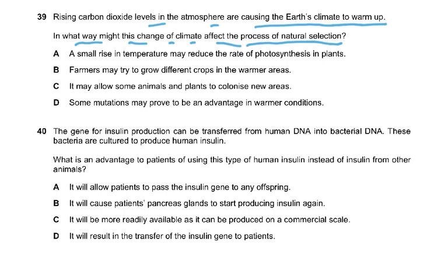The answer is D - some mutations may prove to be an advantage in warmer conditions. Basically in natural selection, some are at an advantage and some are at a disadvantage because of an environmental change. If it's going to warm up, which organisms will survive? The point is that some mutations prove to be an advantage in warmer conditions. Those mutations and advantageous alleles will result in more of that crop or animal. A small rise in temperature may reduce the rate of photosynthesis in plants - that's nothing to do with natural selection.